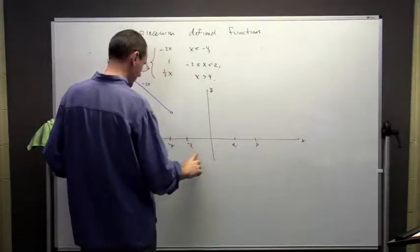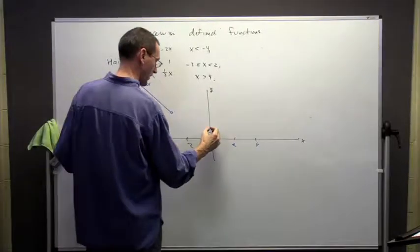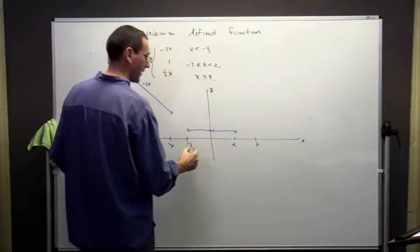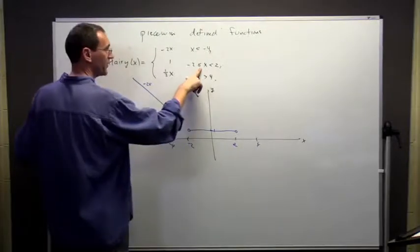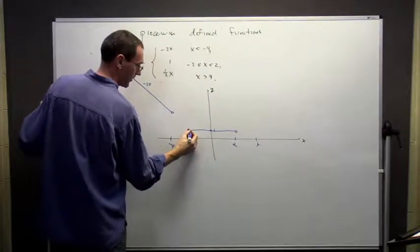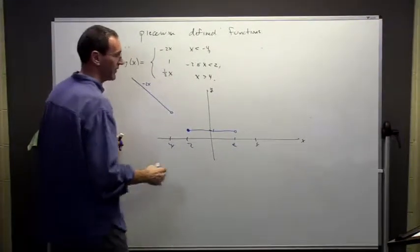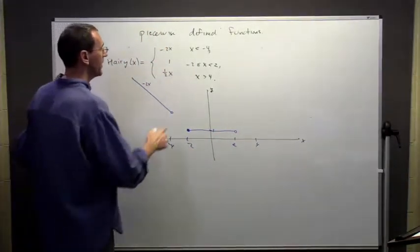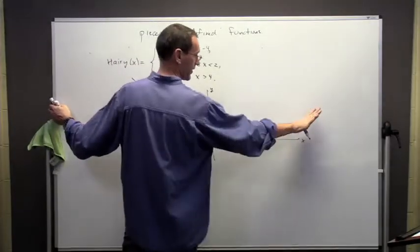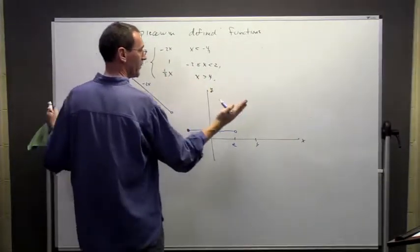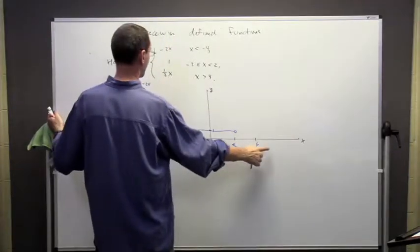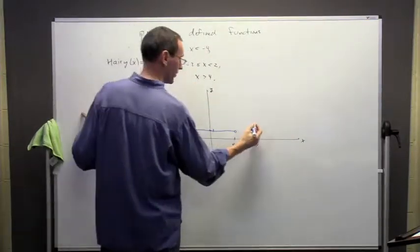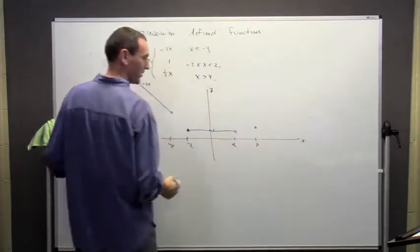If x is between minus 2 and 2, the height is always going to be equal to 1. At x equals minus 2, it's defined, so I'll fill that dot in. But if x equals 2, it's not defined, so we leave that as an open dot. Finally, if x is greater than 4, it's going to be one-half x — a positive slope going up. When x is 6, it's going to be 3. It doesn't include 4, so it has an open dot there — a line with slope one-half.